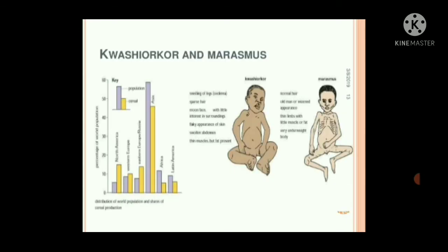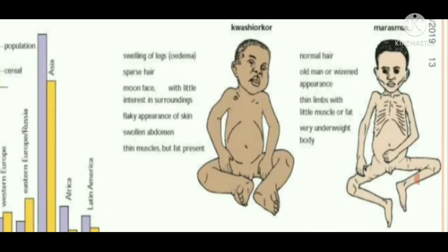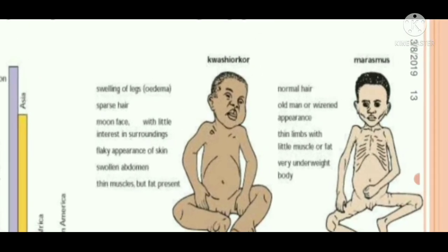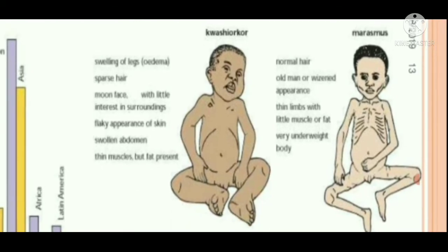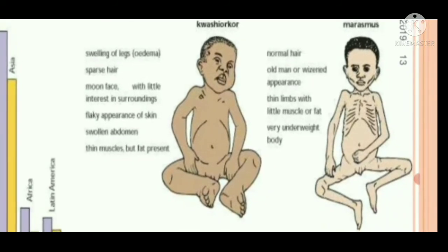You can see in these pictures the clinical features. In kwashiorkor: swelling of legs, sparse hair, moon-like face with little interest in surroundings, flaky appearance of skin, swollen abdomen, thin muscles but fat present. In marasmus: an old man-like appearance, thin limbs with little muscle or fat, and a very underweight body.